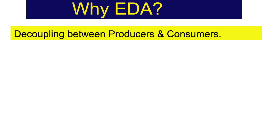Now let's talk about the benefits of event-driven architecture and why we should opt for it when implementing our solutions. The first benefit, which I have already talked about, is decoupling between the producers and consumers — where producers and consumers, which can be separate systems or applications, work independently at their own pace and preferences, with no synchronous communication and no blocking calls between the two.